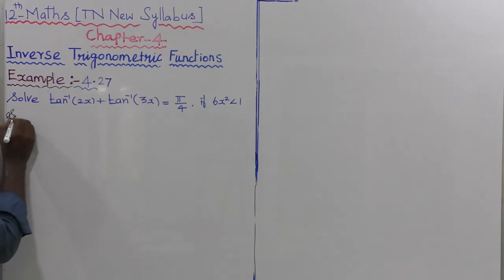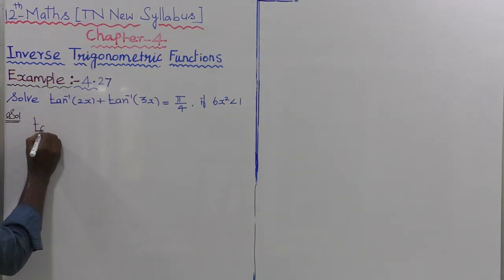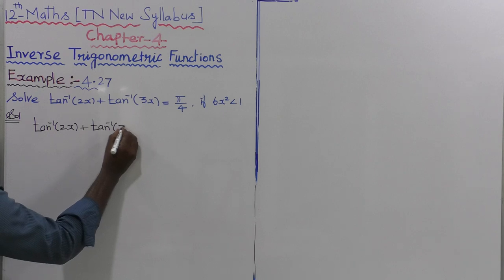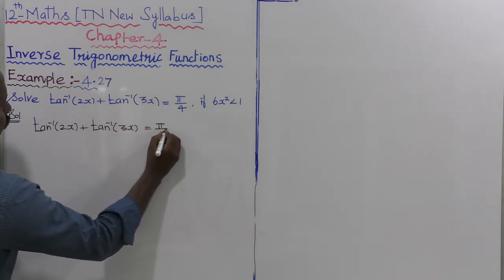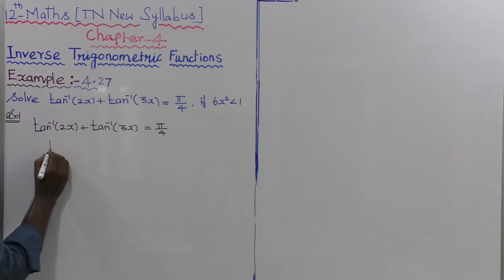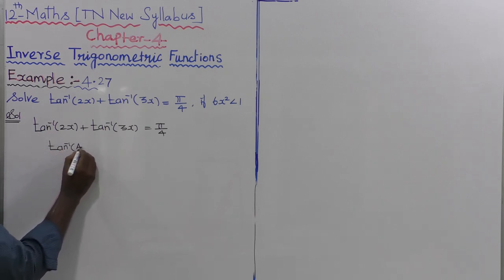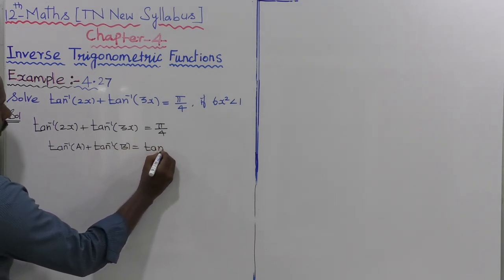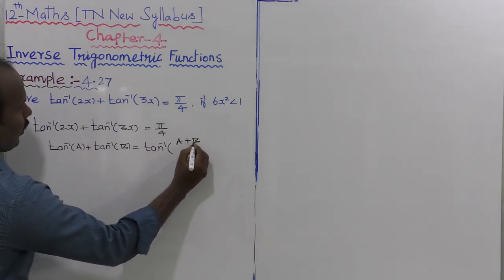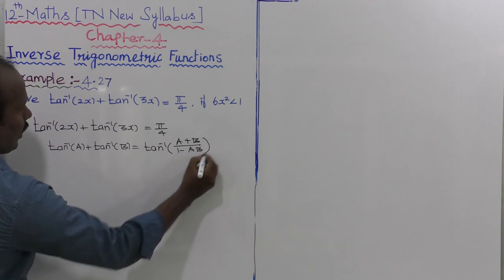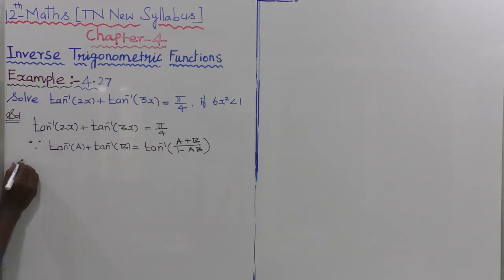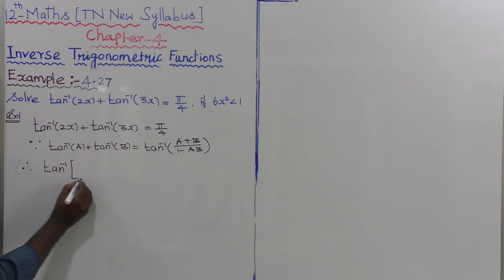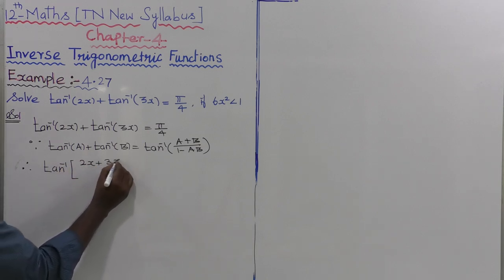The given equation is tan inverse of 2x plus tan inverse of 3x equals pi by 4. We apply the formula: tan inverse of a plus tan inverse of b equals tan inverse of (a plus b) divided by (1 minus ab).